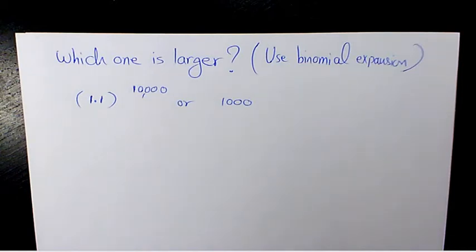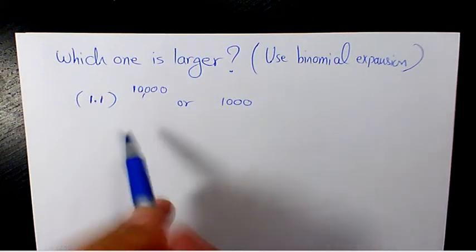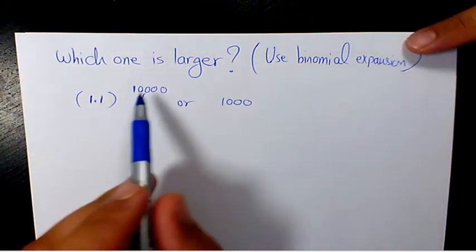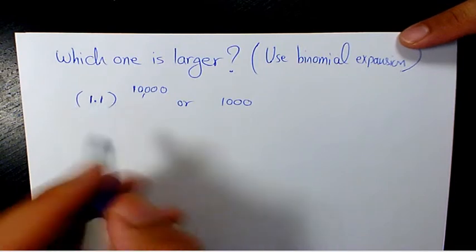What's up guys, this is Massey, welcome to another video. In this video I want to show you which number is bigger. We need to use binomial expansion. One is 1.1 to the power of 10,000 and the other one is 1,000. Now we need to see which one is greater than the other one. So let's use binomial expansion to expand 1.1 to the power of 10,000.